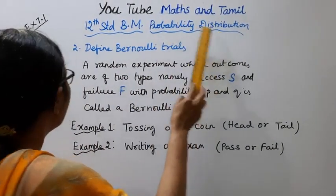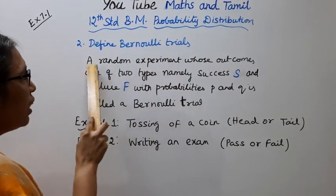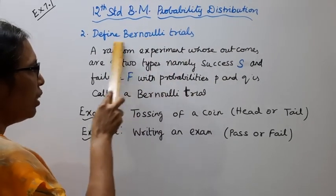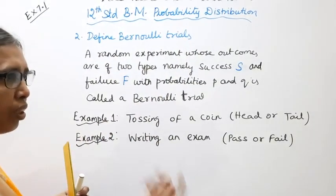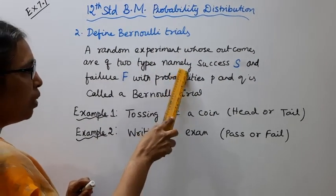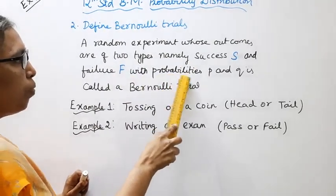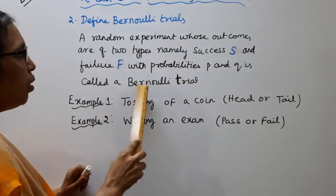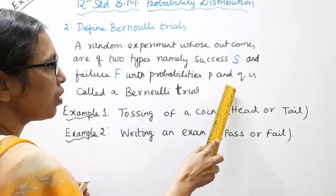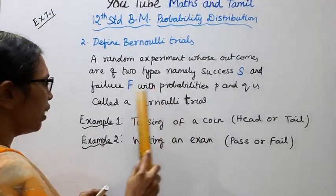To understand the binomial probability distribution, exercise 7.1: Define Bernoulli Trials. A random experiment whose outcomes are of two types, namely Success and Failure, with probabilities P and Q, is called Bernoulli Trials. The parameter where Q equals 1-P.